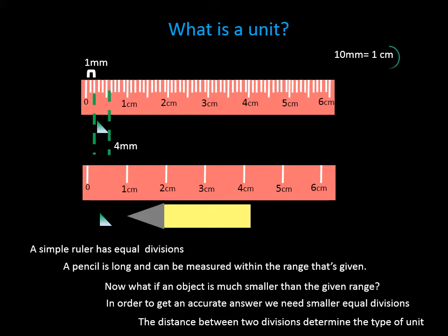As you can see, the unit known as centimeter gave us an accurate measurement for our large object, whereas the mm divisions allowed us to measure something much smaller. It will be much easier to say that the glass piece is 4 mm wide than to say it's 0.4 cm wide.